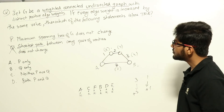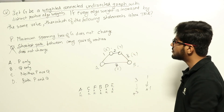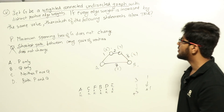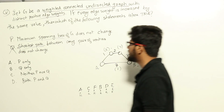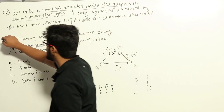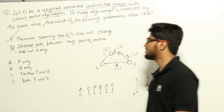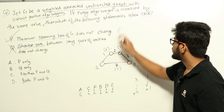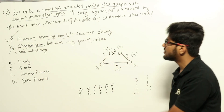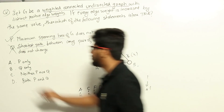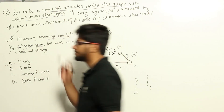So option P is true. The minimum spanning tree of G does not change on increasing all the edges by a constant weight. The right answer is option A, P only.